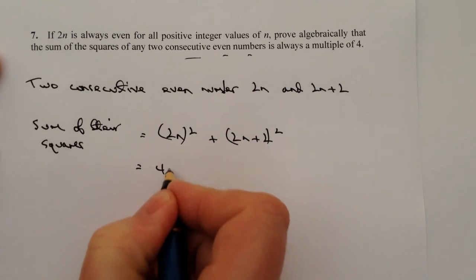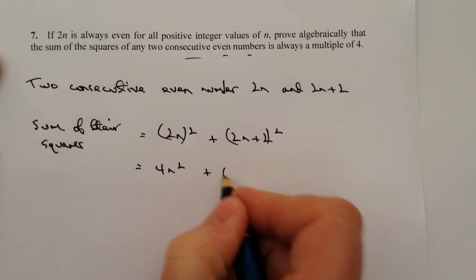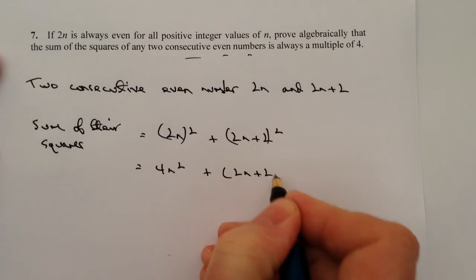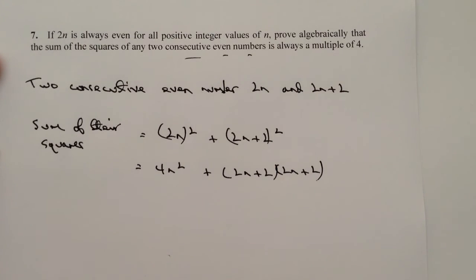Okay, so let's just work that out. So 2n squared is fairly straightforward, it's going to be 4n squared. The next one is going to be 2n plus 2 squared. Well, I'm going to write that out as 2n plus 2 multiplied by 2n plus 2.